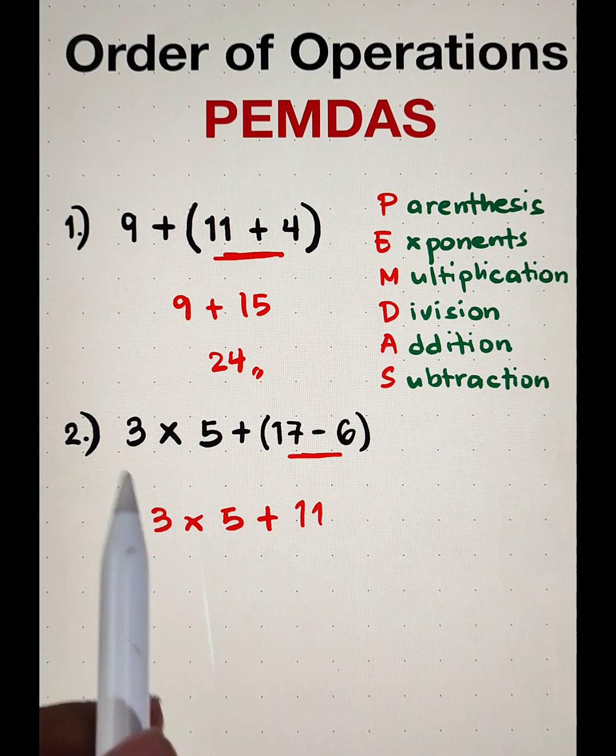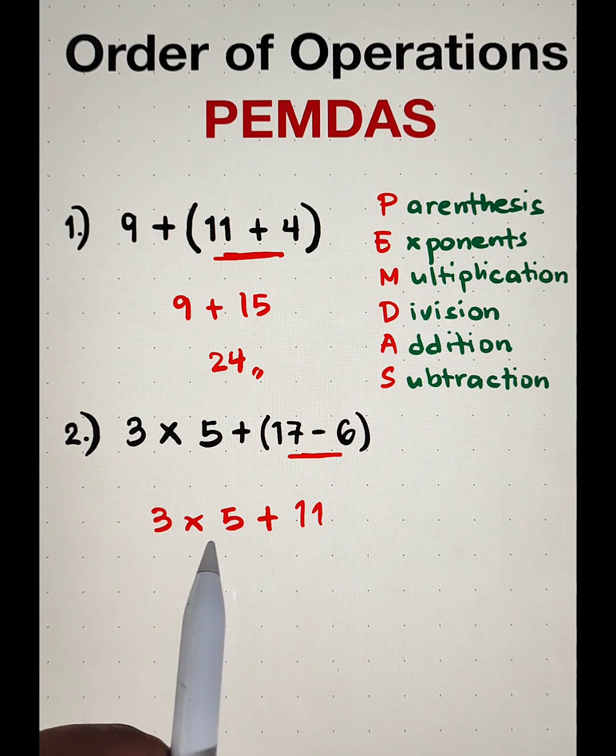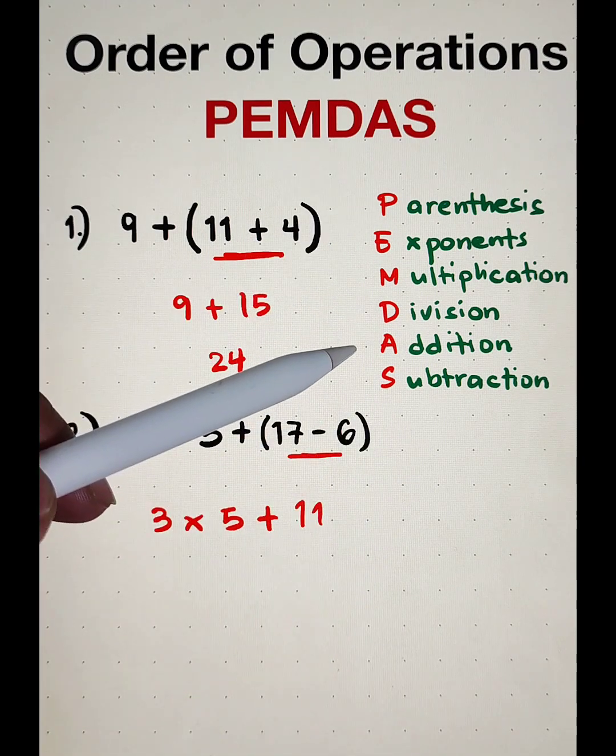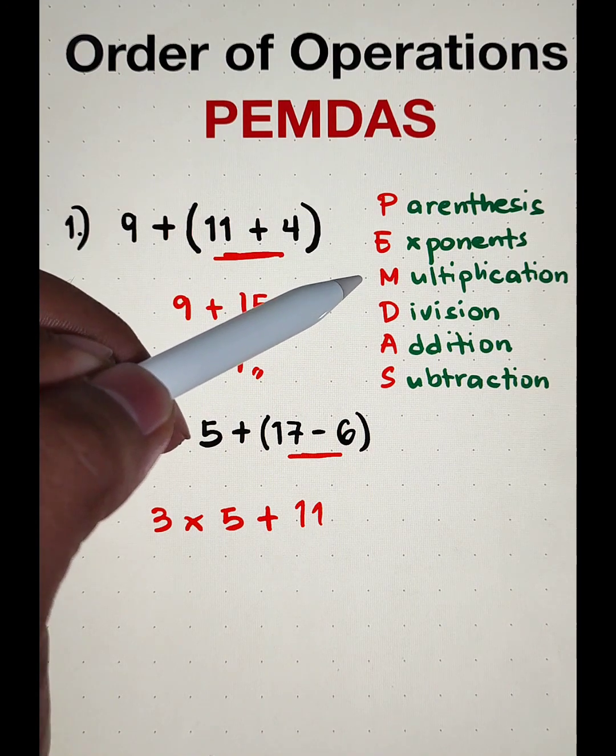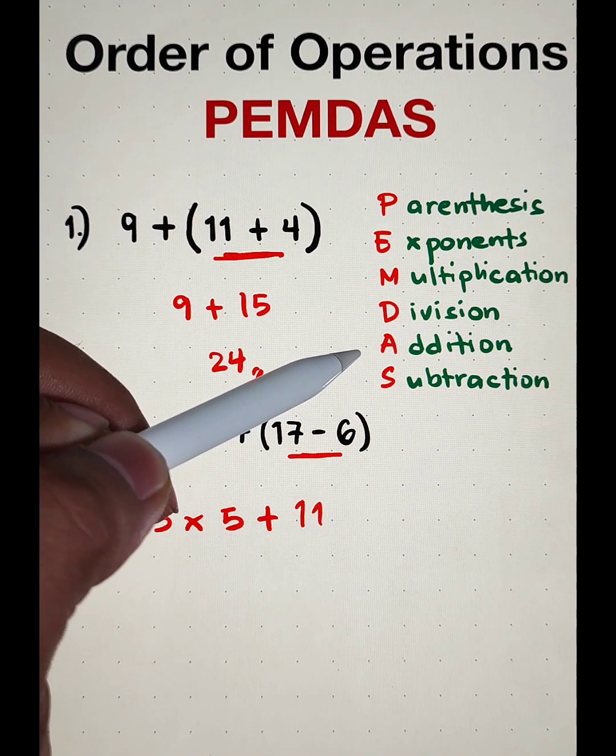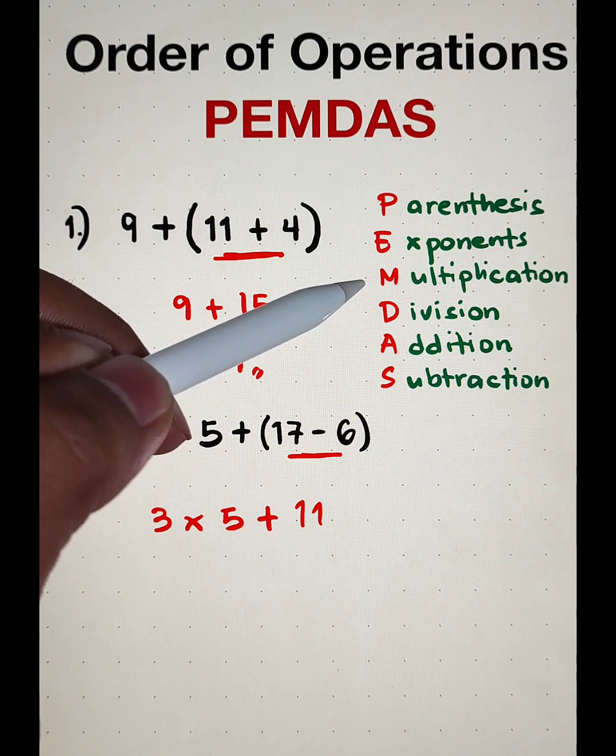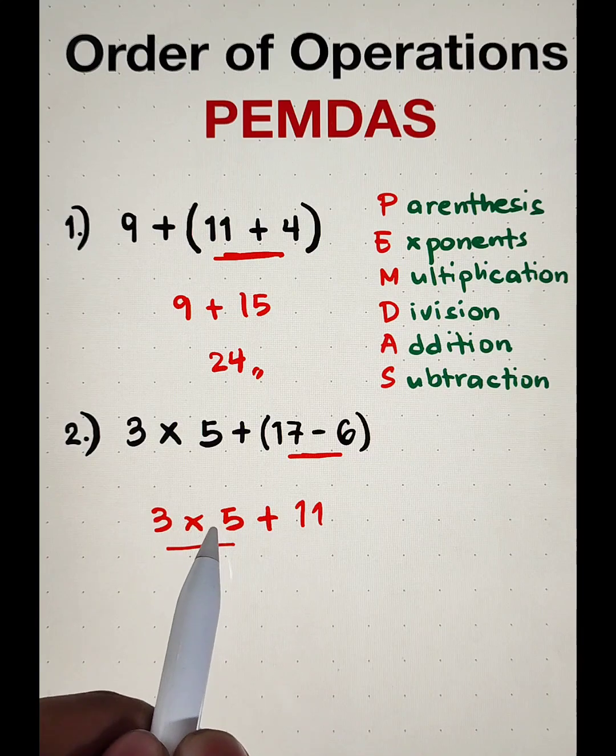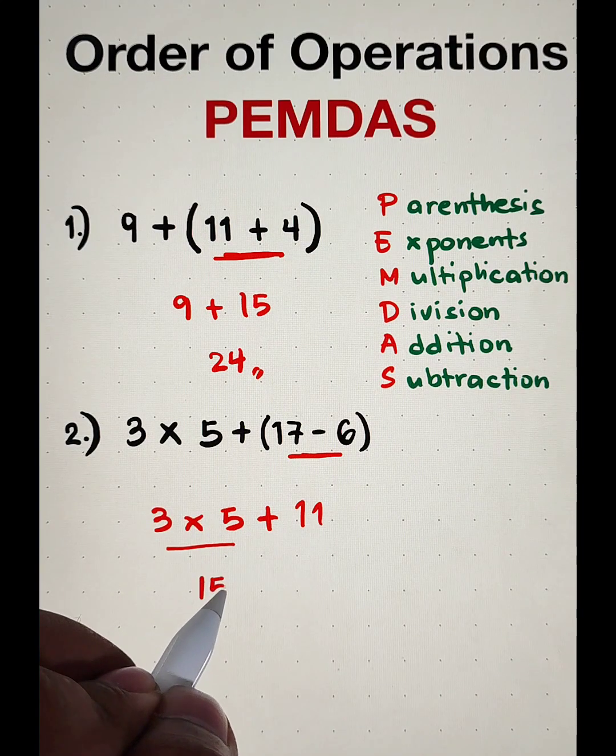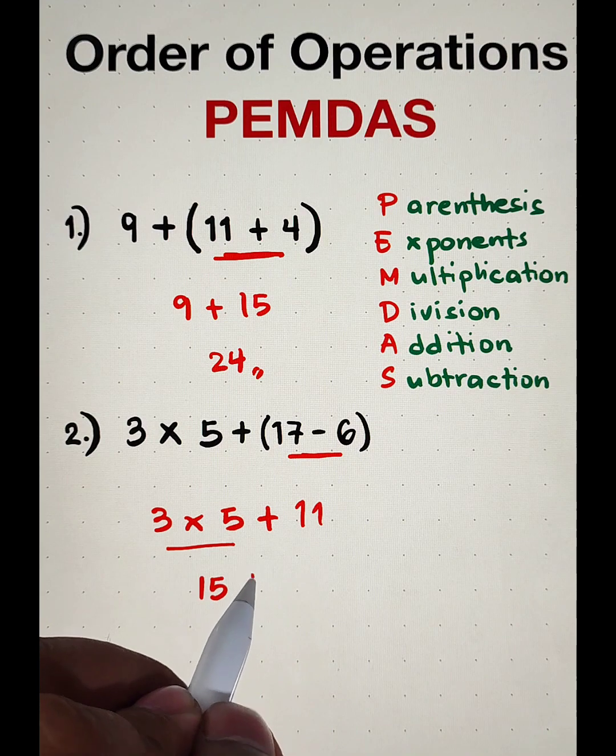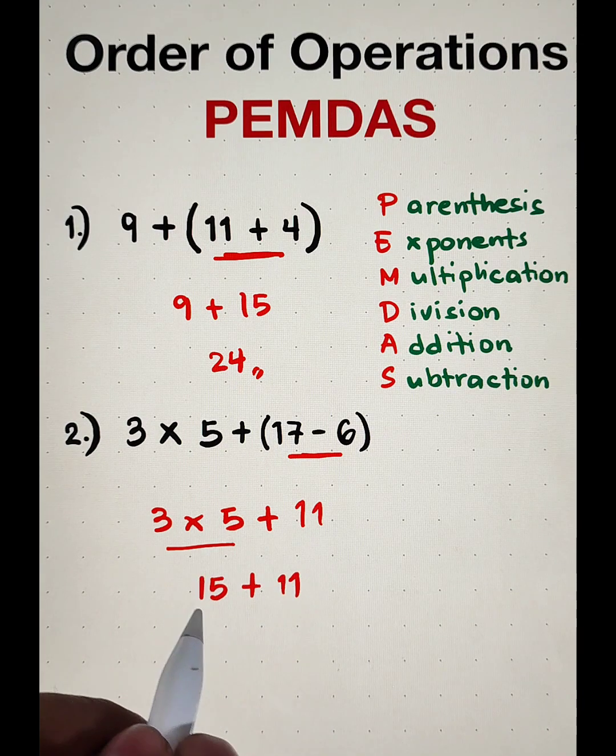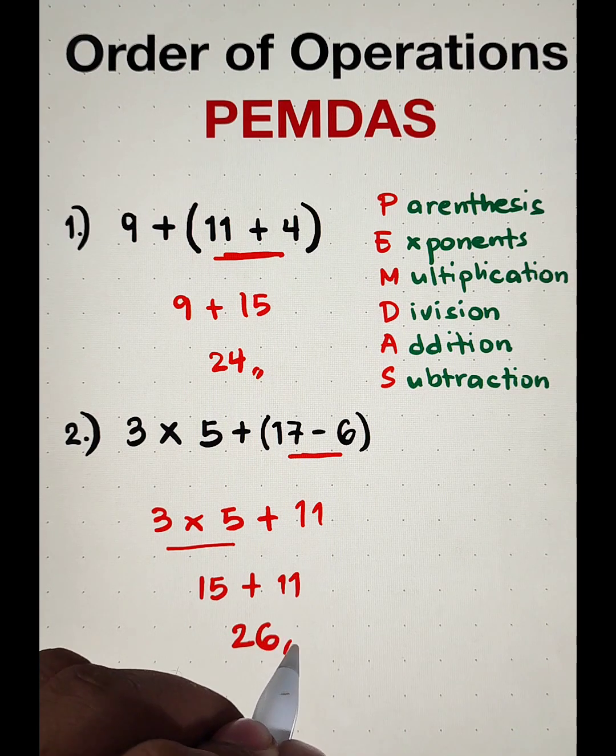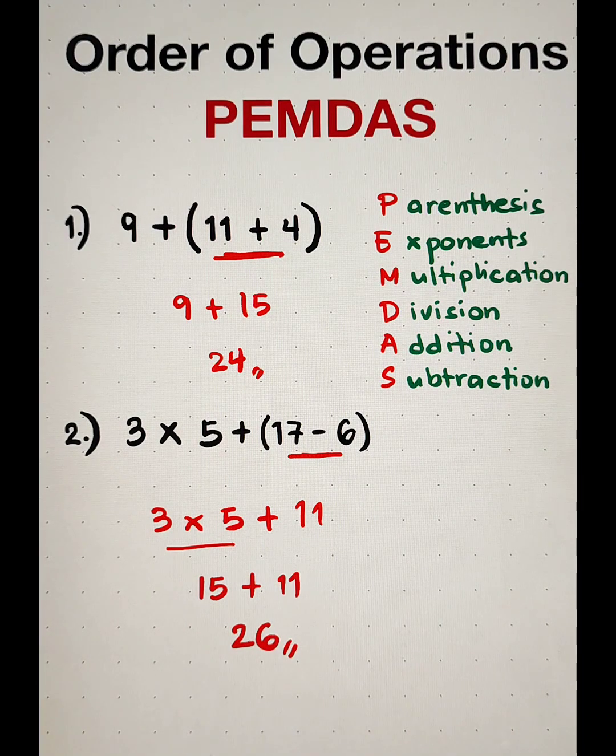So, what's next? So, are we going to multiply 3 times 5, or are we going to add 5 and 11? According to PEMDAS, we will do multiplication first before addition. Multiplication first before addition. So, this one, 3 times 5, this will give us the answer of 15, and then copy plus 11. So, as you can see, 15 plus 11, that is equal to 26. And this is the final answer for item number 2.